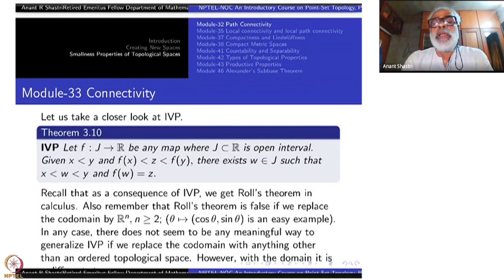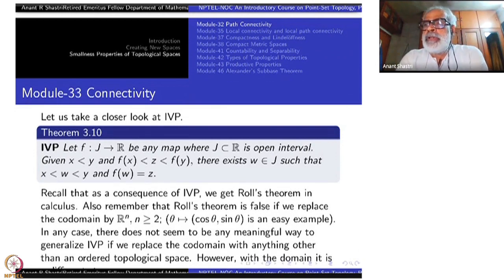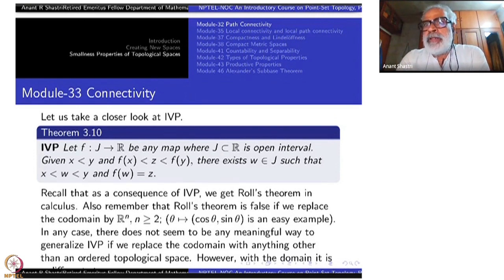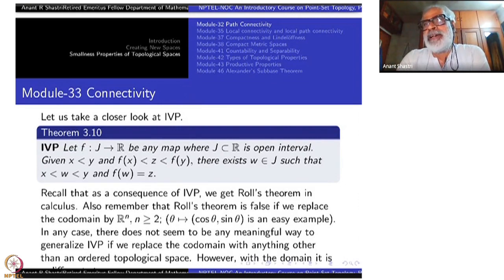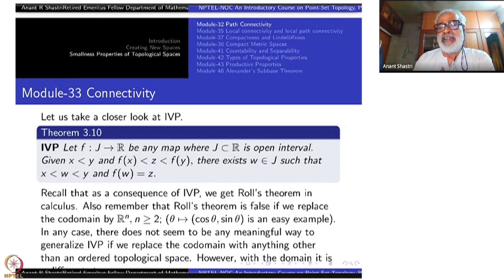Welcome to module 33 of Point Set Topology part 1. Last time I mentioned some property of real numbers: if you remove a point from R, then it gets disconnected. How does one prove that? The Intermediate Value Theorem from real analysis. That will give you automatically that R minus any point is not path connected. The Intermediate Value Theorem is something which is built into the construction of real numbers.